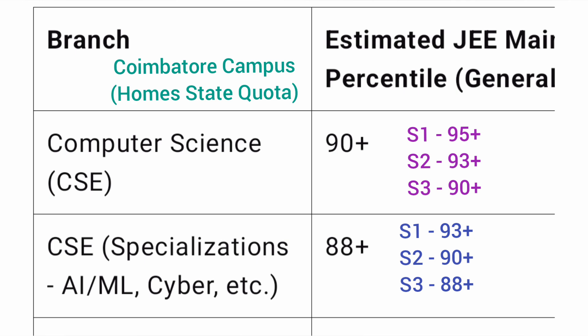Now talking about the JEE Mains percentile needed to get different branches, for CSE — and this is for home state quota students — at 95 percentile and above you can get CSE in slab 1. In slab 2, you can get CSE at 93 percentile plus, and in slab 3 at 90 percentile plus. For CSE specialization branches like AIML and Cyber, competition is still high due to common placements: slab 1 requires 93 plus percentile, slab 2 requires 90 percentile plus, and slab 3 requires 88 percentile.